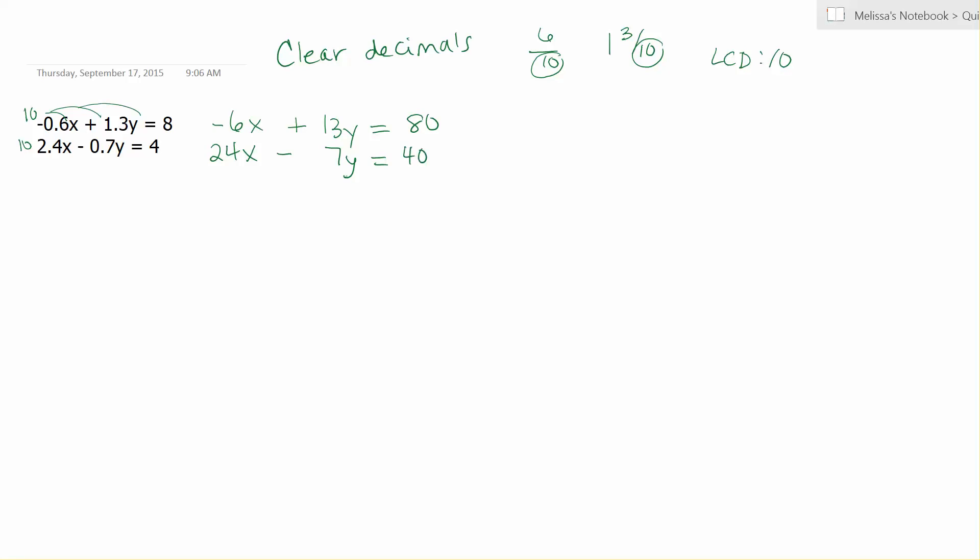Now I have a system with all whole number coefficients, so it's easier. Next, I'm searching for two terms that I can add together and cancel. For instance, a positive 6x and a negative 6x, where the opposites cancel out. Right now, I don't have that, so I can change my coefficients to make the numbers match. If you look at the y's, you have 13y and 7y. There's no way to multiply 7 to make it 13.